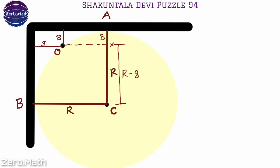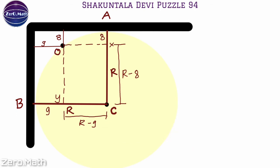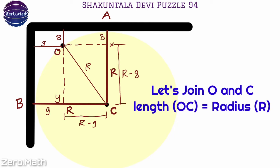In the similar way, if I extend this other line further to point Y touching the radius, the distance between point B and Y will be nine inches. So we can say the distance between point Y and C, the center of the circle, is r minus nine inches. Let's join points O and C — this length will be the radius of the circle, equal to r.